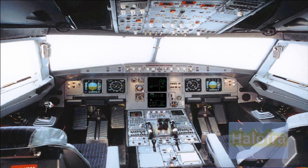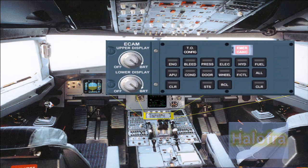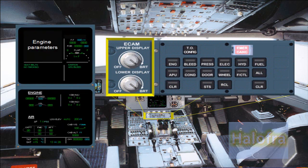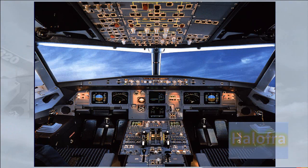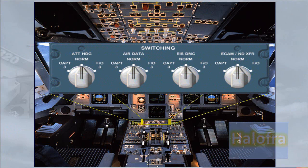Below the ECAM displays on the center pedestal is the ECAM control panel. The two controls on the left-hand side are to adjust the brightness of the two ECAM screens or to turn them off. We will look at the rest of the controls on this panel in more detail later. Just below the ECAM screens on the pedestal is a switching panel for use in abnormal situations to restore data to the EFIS and ECAM displays. You will use this panel in the EIS reconfiguration module.